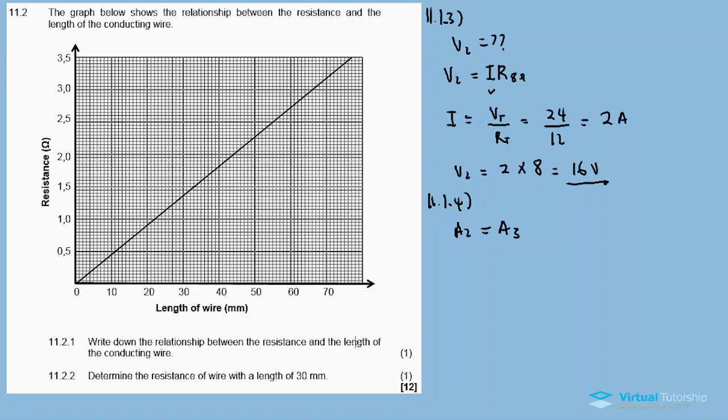11.2.1: Write down the relationship between the resistance and the length of conducting wire. Since we have a straight line, the conclusion is that resistance is directly proportional to the length of wire. As we increase the wire length, the resistance increases.